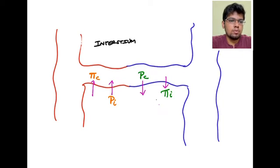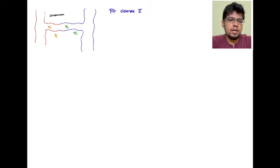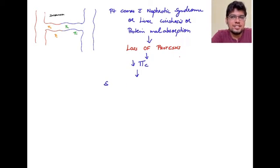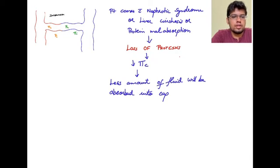Imagine you are a medical officer in a PHC. A patient comes with nephrotic syndrome, liver cirrhosis, or protein malabsorption. The common feature is loss of proteins. In nephrotic syndrome, albumin leaks from the glomerular capillaries into the urine. In liver cirrhosis, there is decreased albumin synthesis. In protein malabsorption, there is decreased absorption of proteins. With no protein or very less protein, there is less fluid absorbed into the capillaries, so more fluid stays in the interstitium, which causes edema.